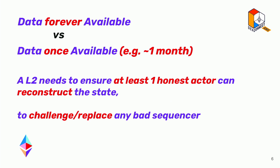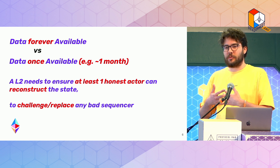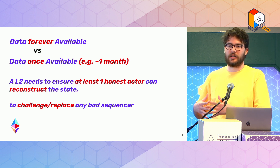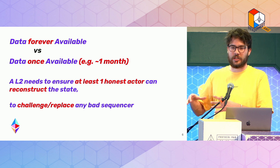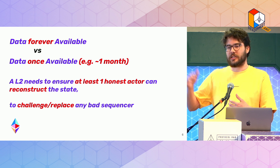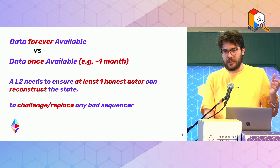The last part of the basics is the difference between data being forever available and data being once available. As a layer 2 system, you just need a system to reconstruct state from — you need one honest actor to be able to do this. If you assume the layer 2 system can retain data as long as honest actors exist, this guarantee gets a lot better. We can sustainably scale data, increase data by a lot more, and we're only talking about a month of data at that point.